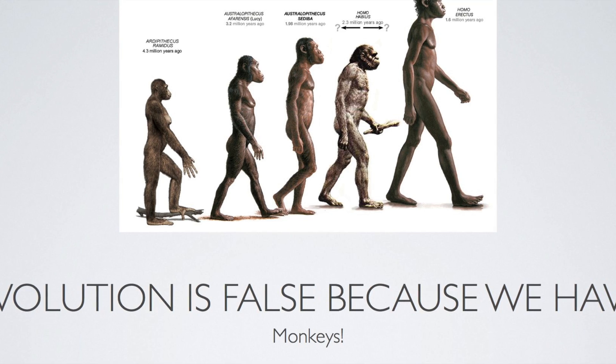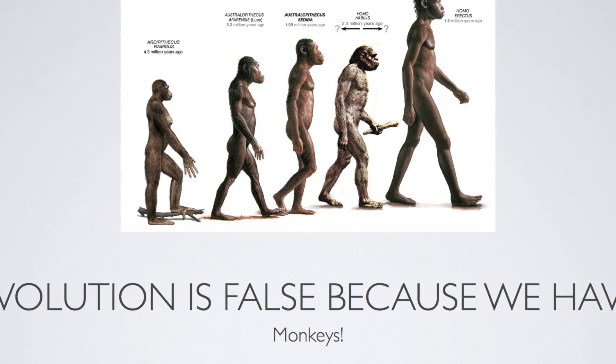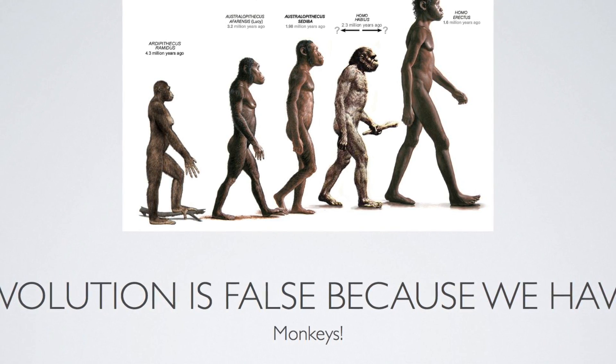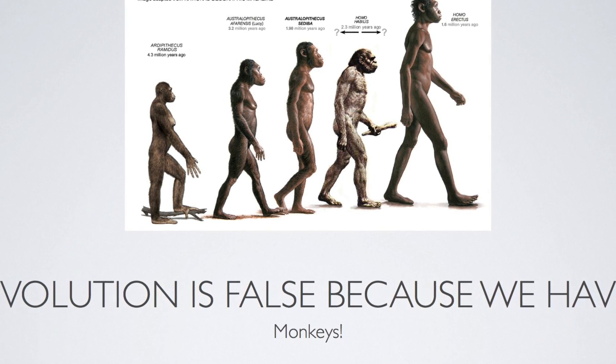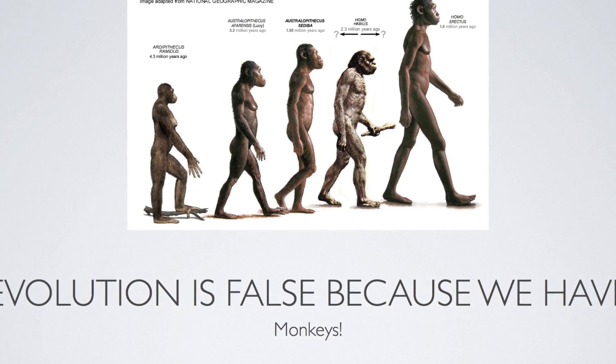Evolution discusses common descent. This is a process where over millions of years, small changes in morphology become taxonomically relevant.